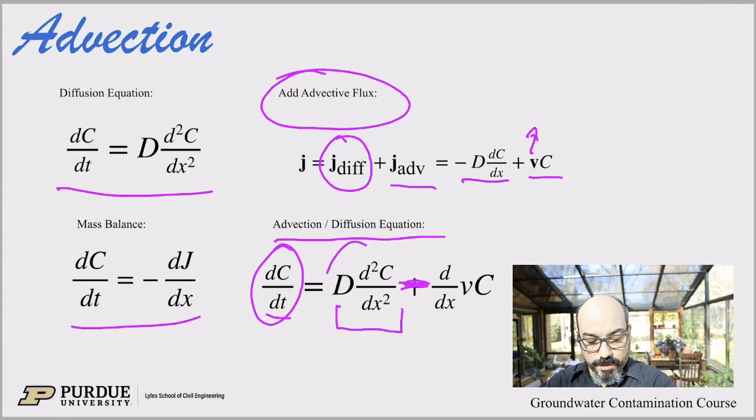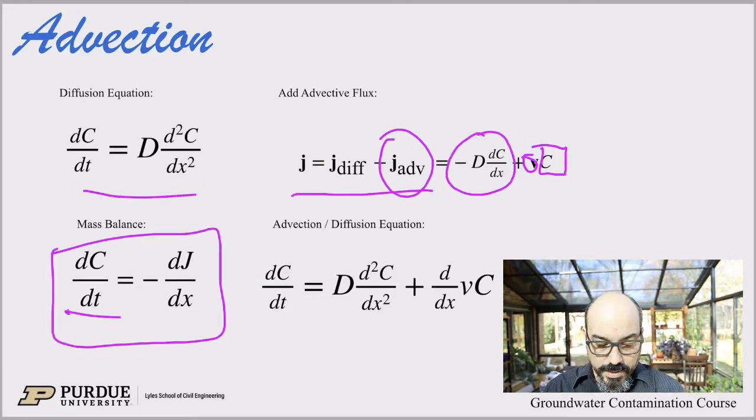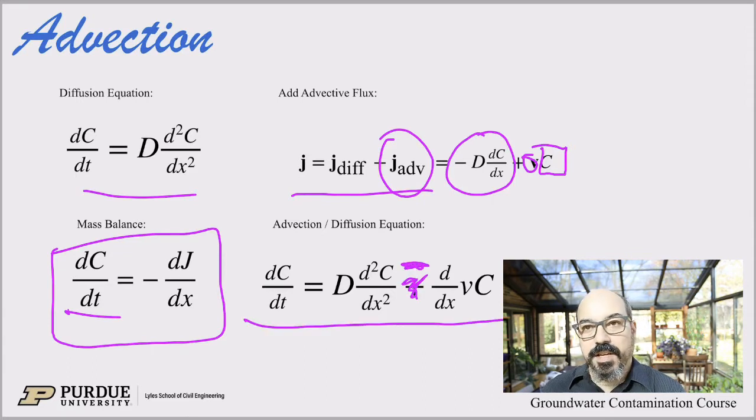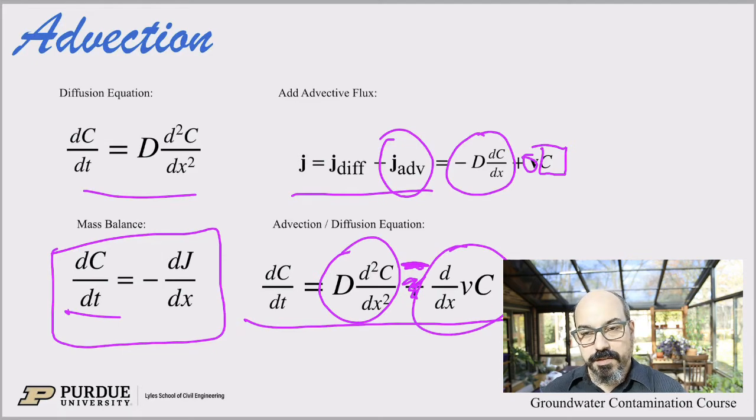The accumulation equals the diffusion part of the equation that we've seen already minus the advection part of the equation. We see there's a minus here, so now our advection-diffusion equation becomes dC/dt equals the diffusive part and the advective part. So again, d/dx vC - exactly the same derivation as before, except now the advective flux is added, so we have the velocity coming in here.